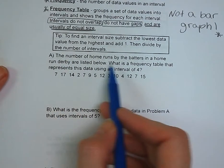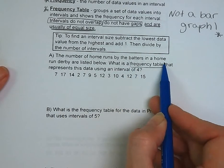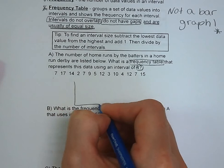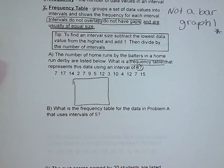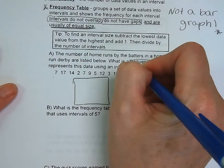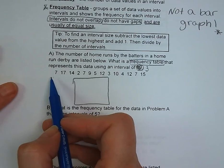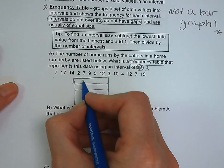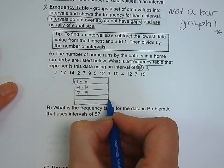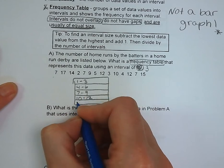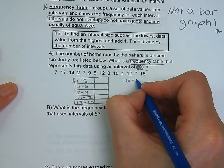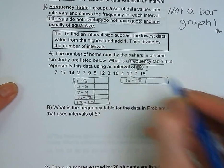Let's look. We've got the number of home runs by the batters in a home run derby listed below, and we want to know a frequency table that represents this data using an interval of 4. So our lowest, we could start out down at 1. Did I say 4? You did. We'll do an interval of 3. Normally you'll use a space that's big enough for all of them.